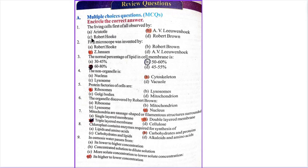The living cells were first observed by B. A.V. Leeuwenhoek. First microscope was invented by C. Z. Janssen. The normal percentage of lipid in cell membrane is 50-60%.